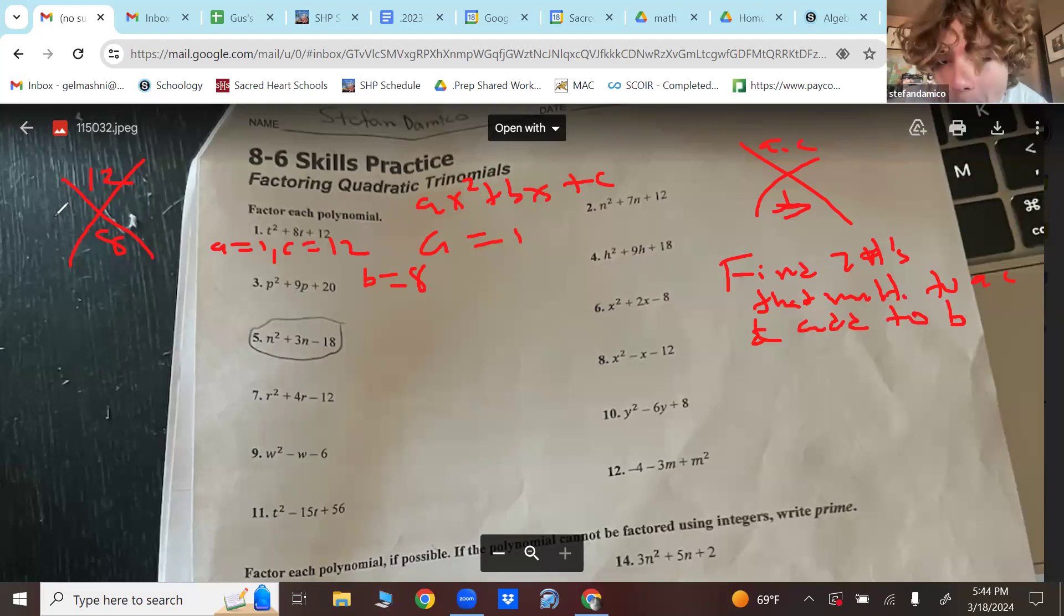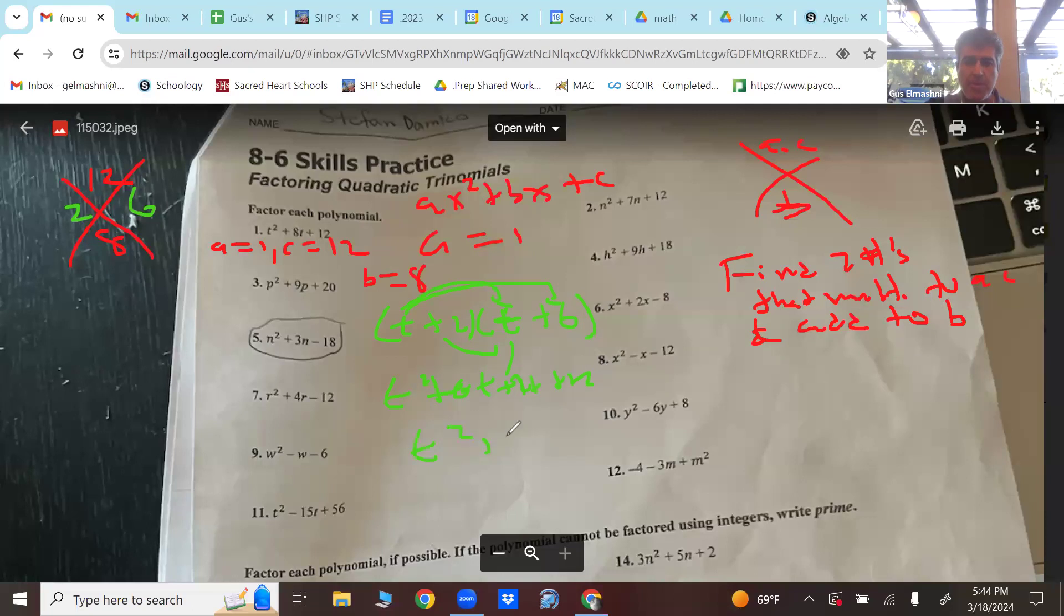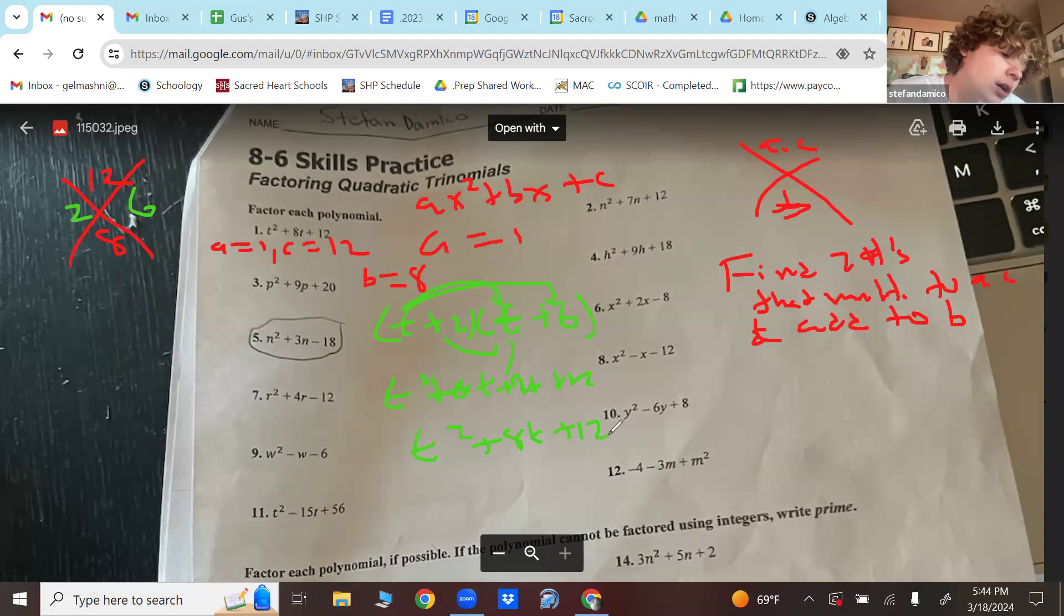In this case, it'll be 2 and 6. And at that point, you're done. That's it. It's going to be t plus 2 and t plus 6. You go straight to the answer. Because if you foil it, you get t squared, 6t, 2t, and 12. You get t squared plus 8t plus 12. That's that. There you go.